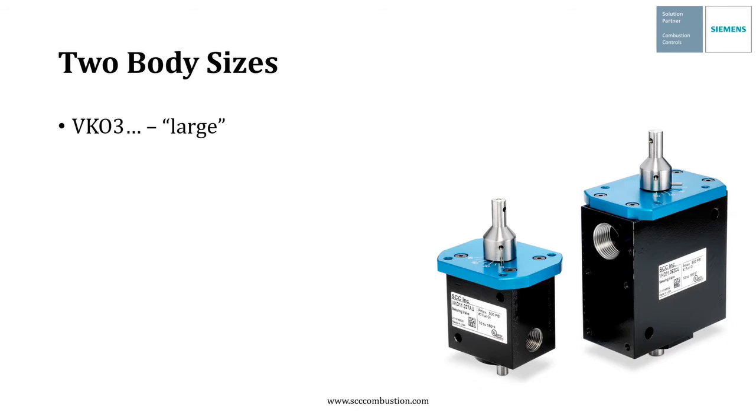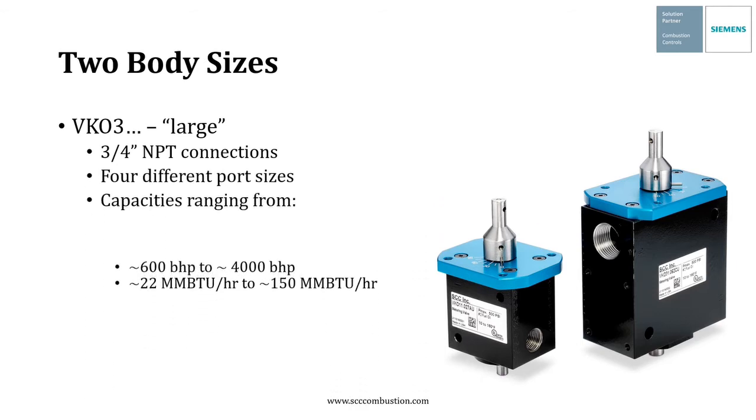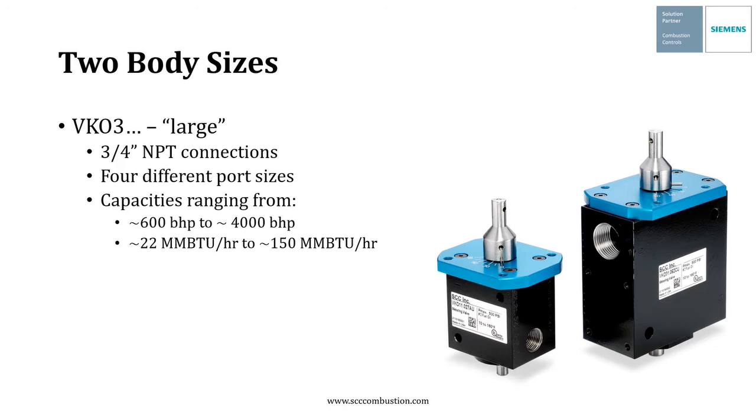The VKO-3 or the large body size comes with three quarter inch NPT connections and in four different port sizes. Capacities on the VKO-3 range from approximately 600 horsepower to approximately 4,000 horsepower or 22 million BTUs per hour to about 150 million BTUs per hour, again varying quite a bit based on the fuel and the pressure available.